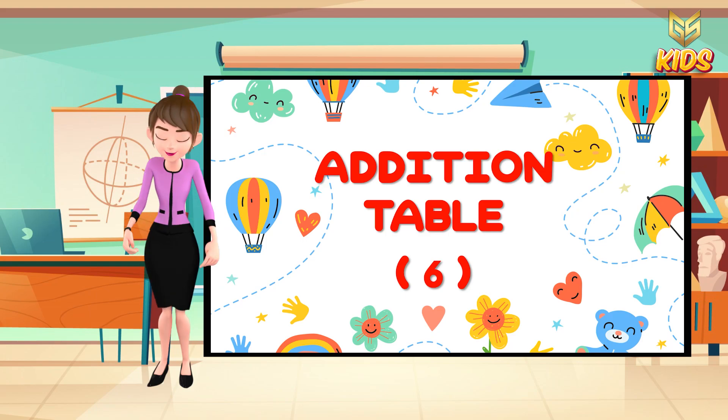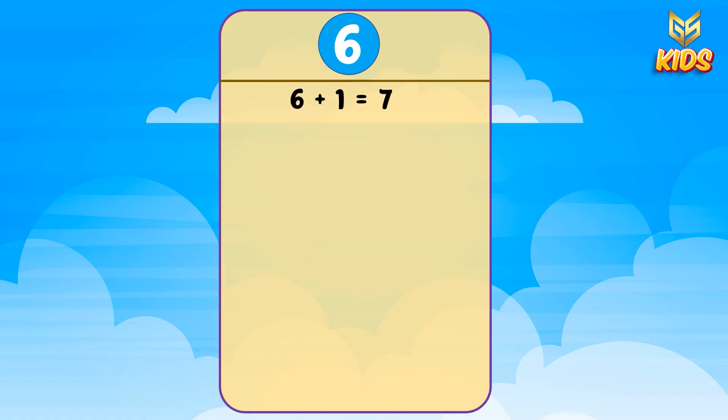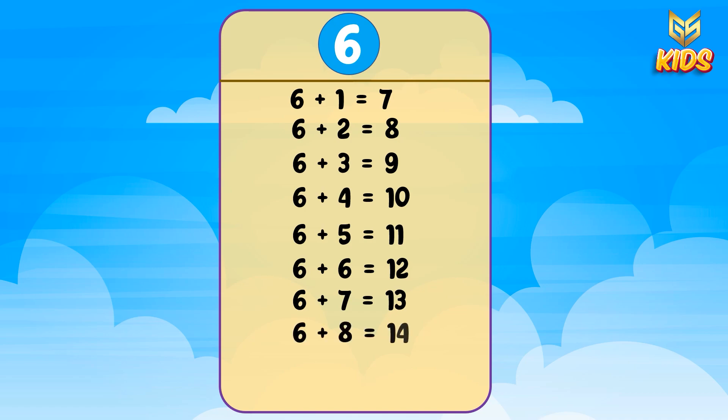Let's sing with me. 6 + 1 = 7, 6 + 2 = 8, 6 + 3 = 9, 6 + 4 = 10, 6 + 5 = 11, 6 + 6 = 12, 6 + 7 = 13, 6 + 8 = 14, 6 + 9 = 15, and 6 + 10 = 16.